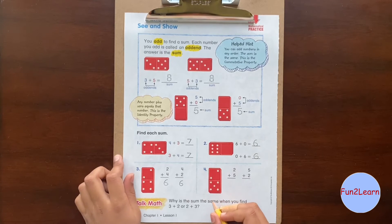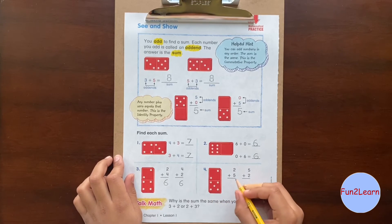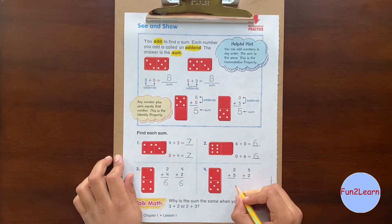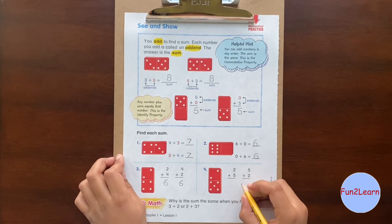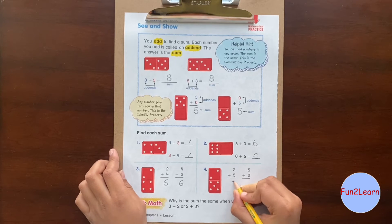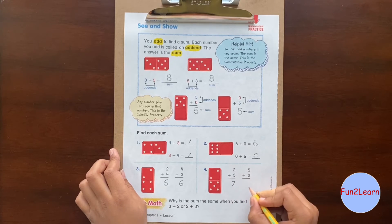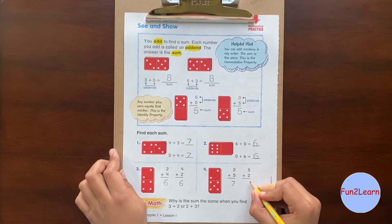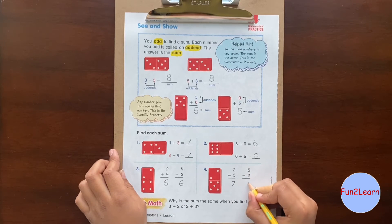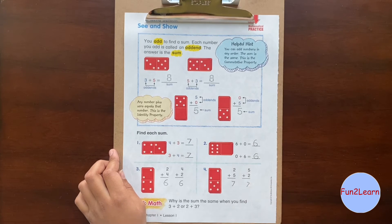Question number 4: 2 plus 5. 2 plus 5 is 7. So 5 plus 2 is 7. That is the commutative property.